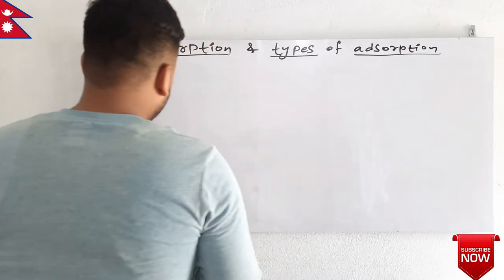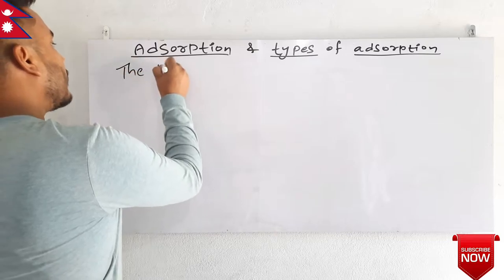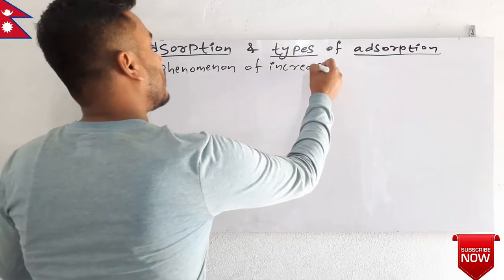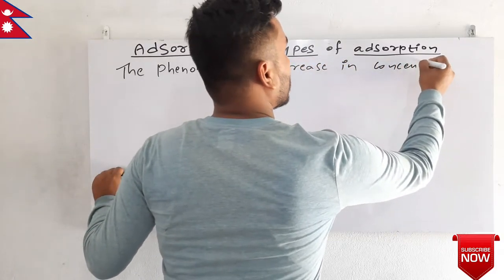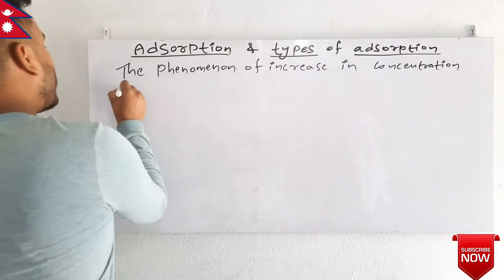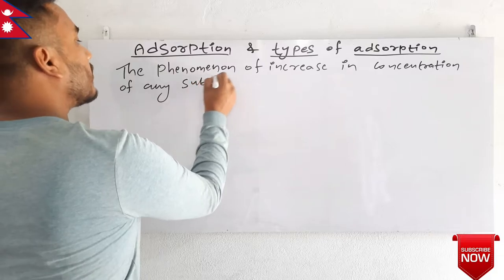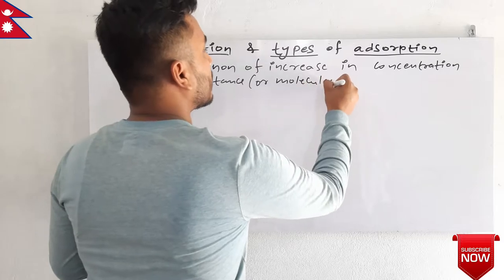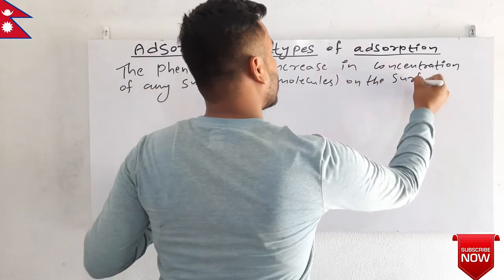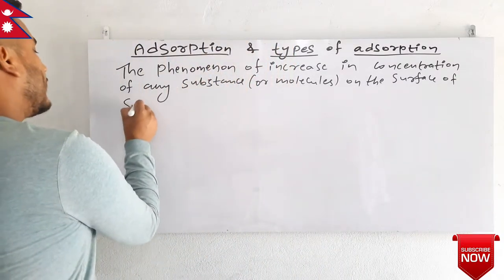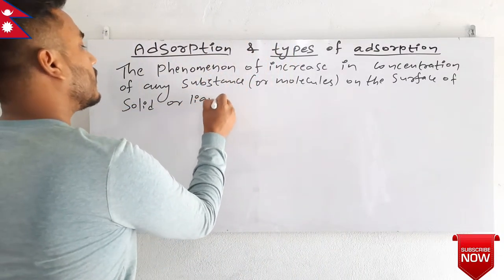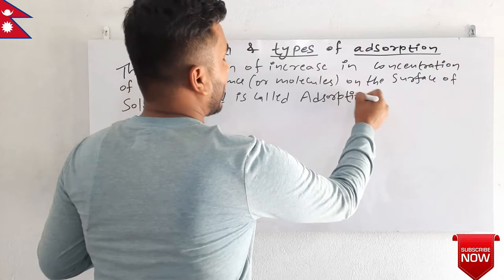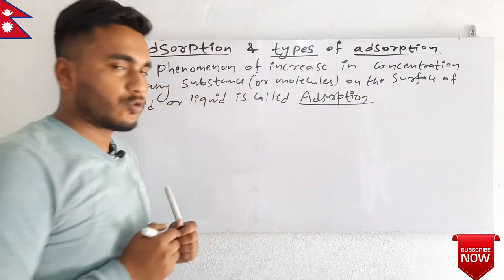The definition of adsorption is: the phenomenon of increase in concentration of any substance or molecules on the surface of a solid or liquid is called adsorption.